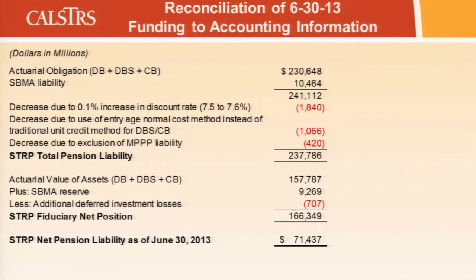On the asset side, the actuarial value of assets from the valuations is taken, the SBMA reserve is added, additional deferred investment losses are removed, and this produces the fiduciary net position. The net of those two adjusted numbers gives the NPL at June 30, 2013. This reconciliation illustrates why the comparison between the UAO and NPL appears irrational on the surface, and illuminates the various components of the adjustments on both the liability side and the asset side.